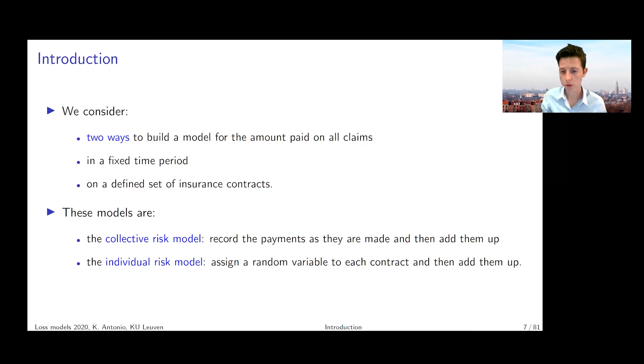In the individual risk model, we're going to focus on all of the contracts and assign a random variable to each of those contracts. That random variable can take the value of zero if nothing happens in terms of a compensation that we need to pay to our policyholder. This collective risk model often comes back in life insurance or health insurance structures, whereas the collective risk model is really the kind of thinking that we apply in non-life insurance contexts where we focus on this frequency and severity strategy.